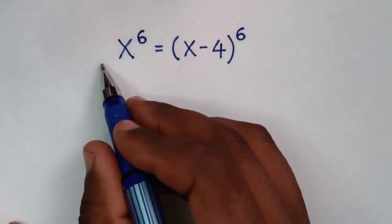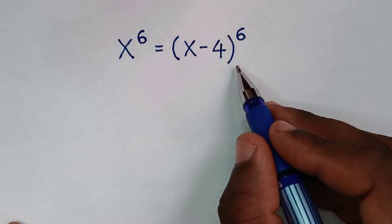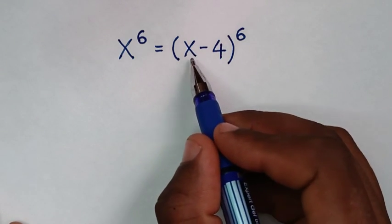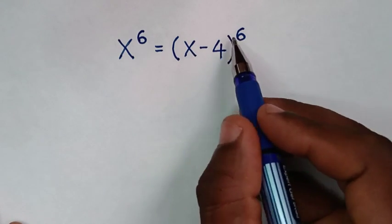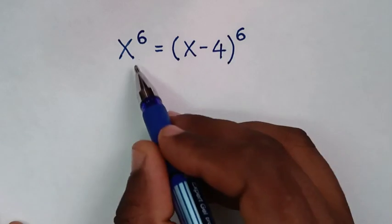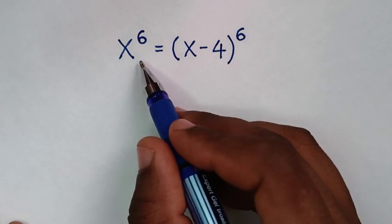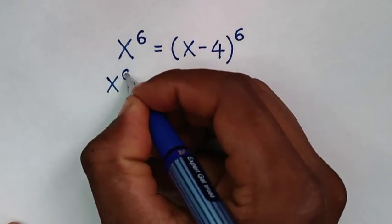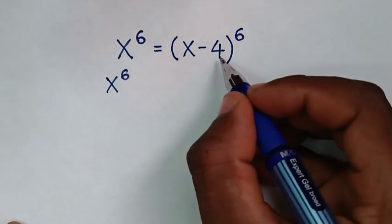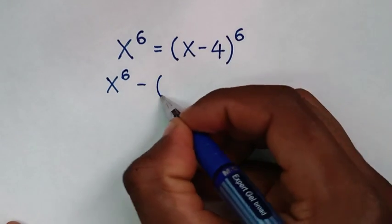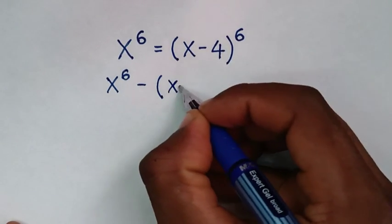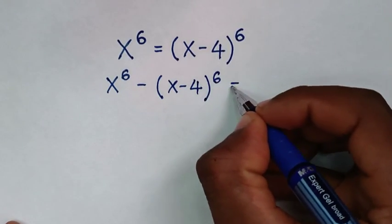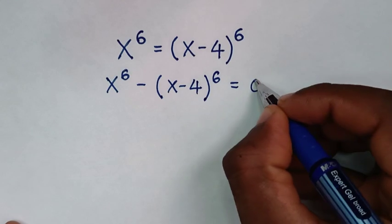To find the values of x from this equation, in the first step we'll take the (x minus 4) bracket power 6 to the left side, so it will be x power 6 minus (x minus 4) power 6 is equal to 0.